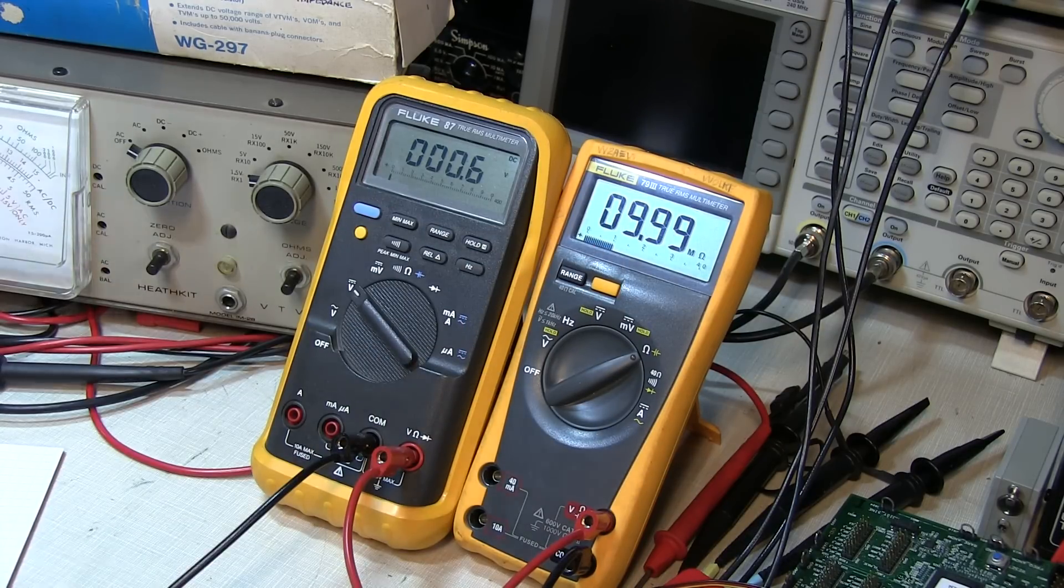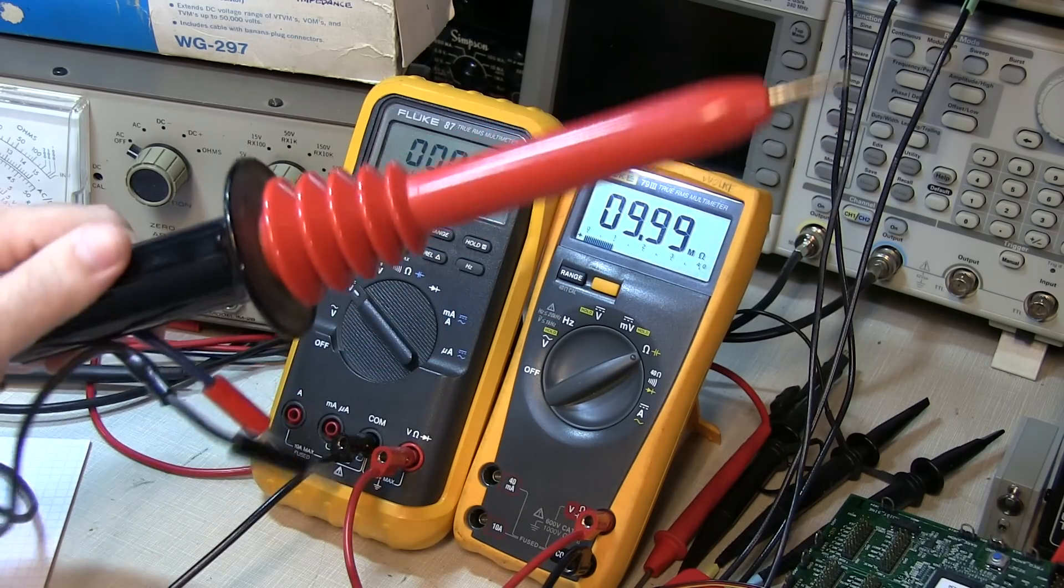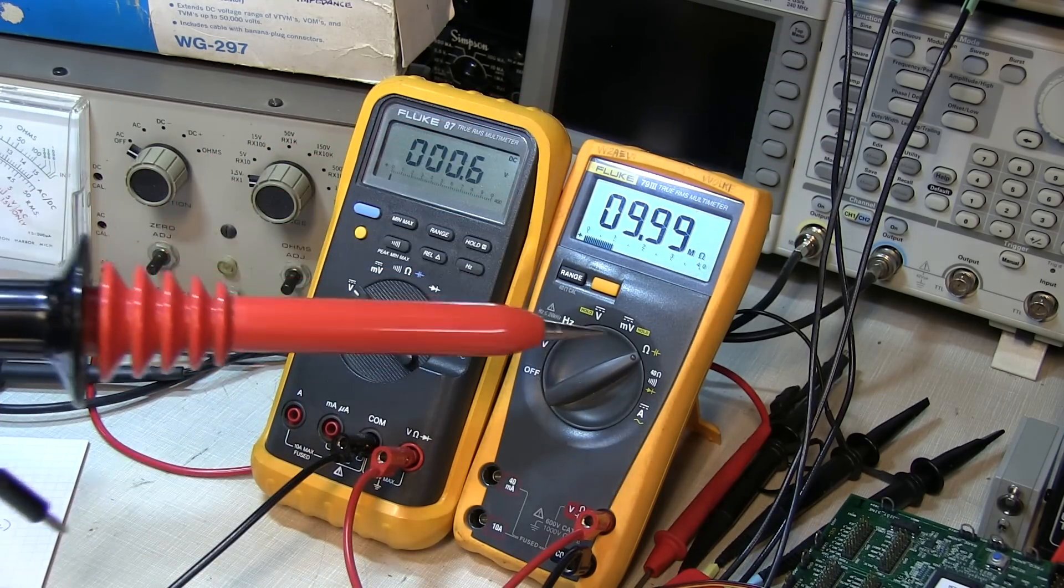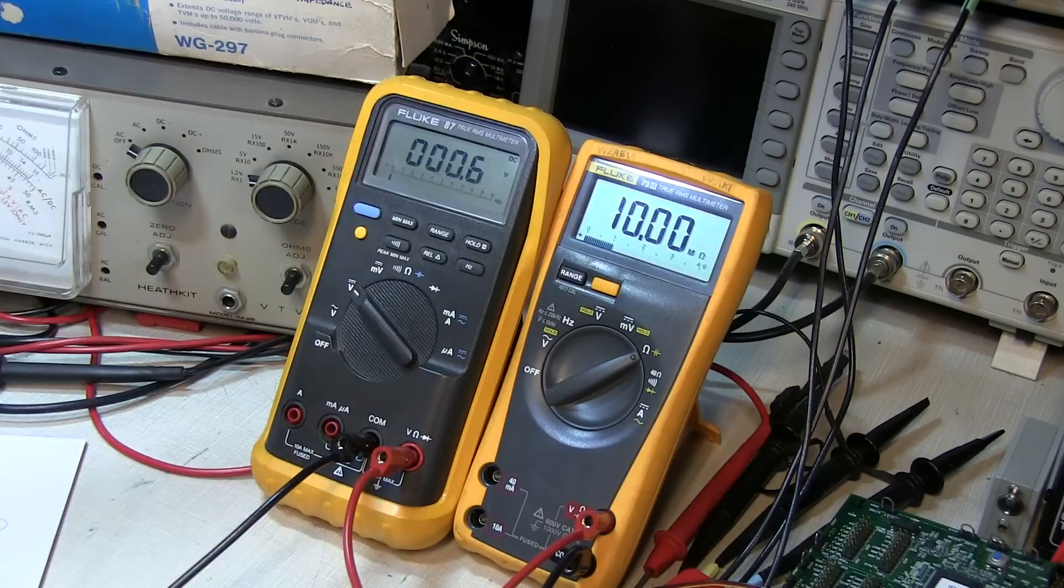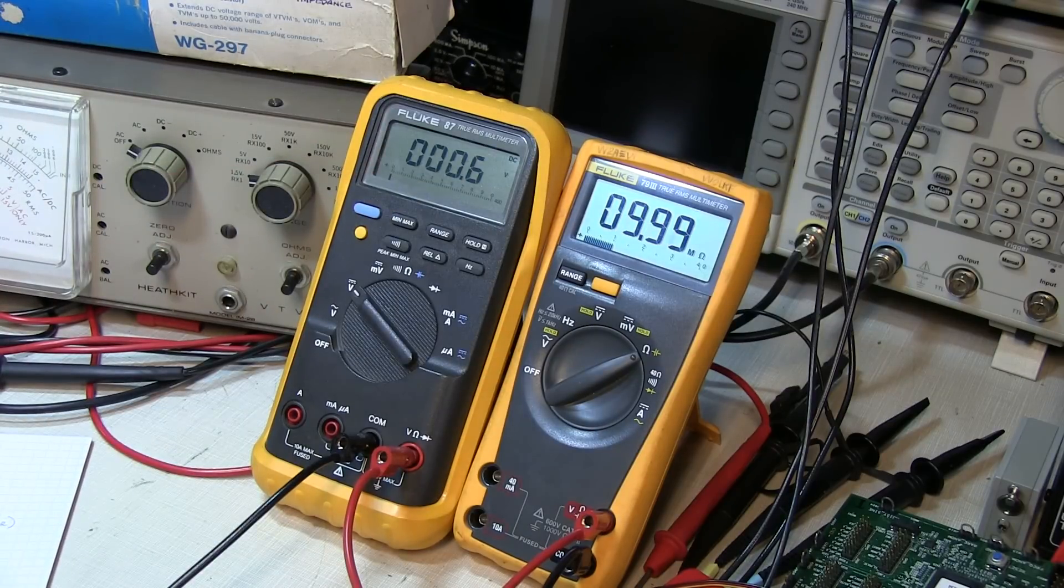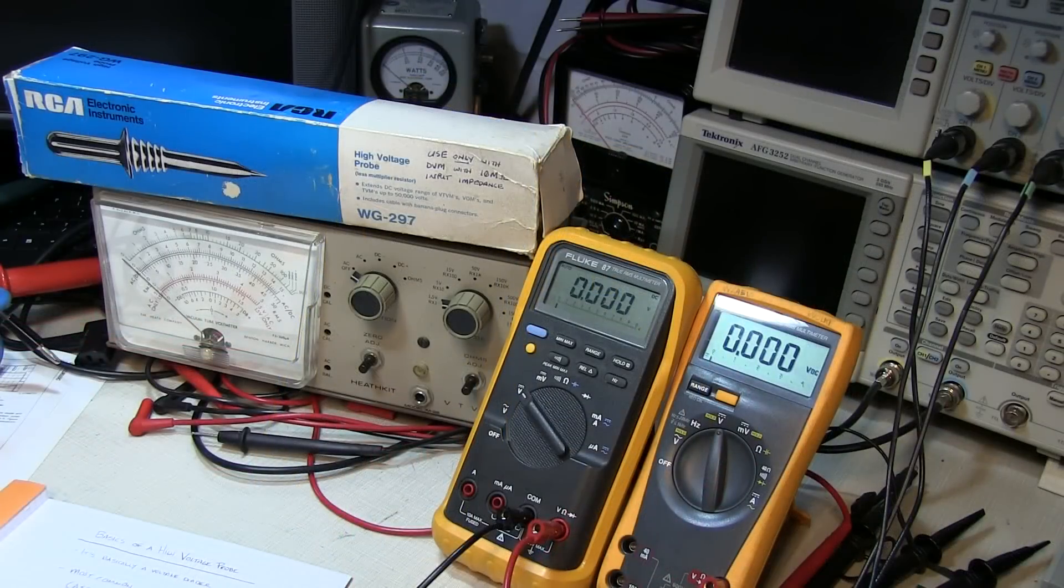So if you're going to use one of these high voltage probes, you want to be sure that you know what the input impedance is of your meter in the range that you're going to use it.